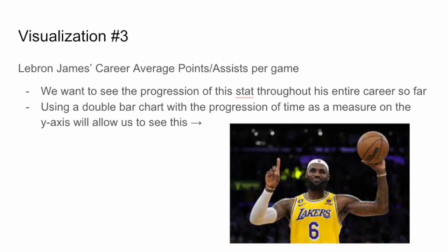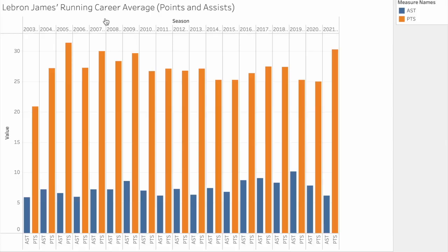For our third visualization, we will be observing LeBron James' average points and assists per game each season of his career so far. A double bar chart is a great option for displaying this data, with the total numbers of each respective stat on the y-axis and the progression of seasons on the x-axis, allowing you to see the progression of both stats throughout his career. This data set is interesting specifically for this player because LeBron James is known for his longevity and maintaining a consistent level of play throughout his entire career.